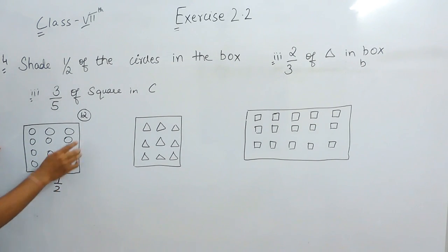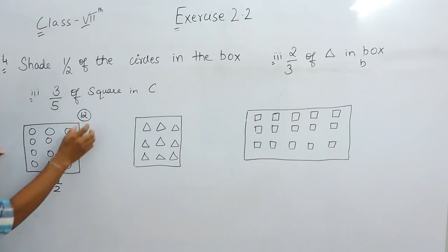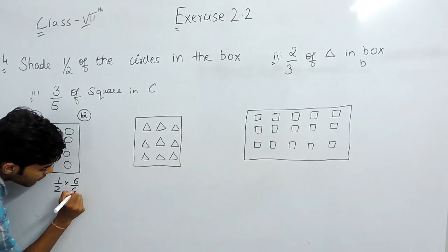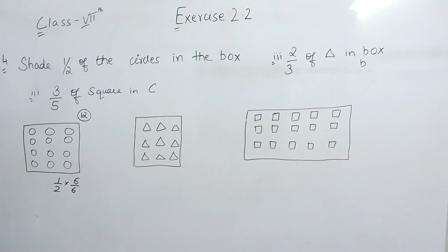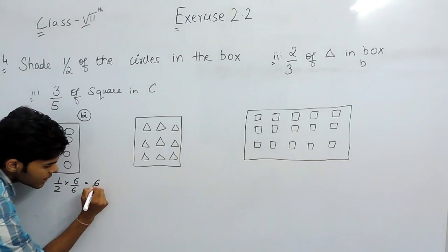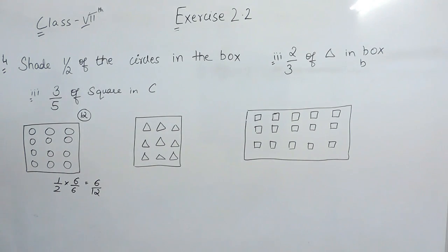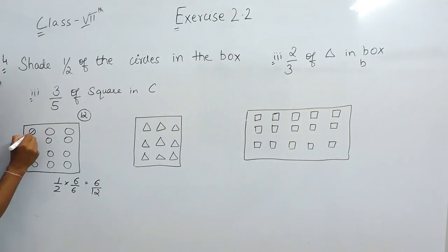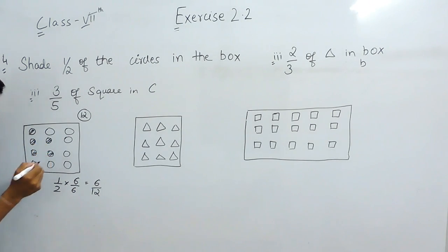What we can do is make the denominator equal to 12. We multiply and divide by 6, which gives us 6 by 12. Now we know that we have 12 circles total, and out of these 12 we have to shade any 6. So we will shade any 6 circles. This is the answer of part A.